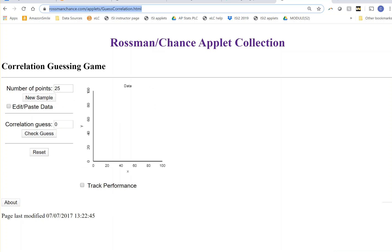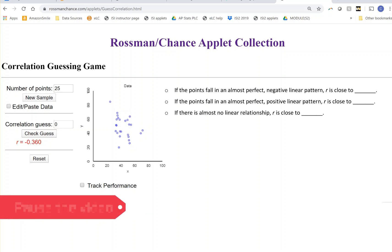Okay, so in this Guess the Correlation app, when you click New Sample, it gives you a sample of dots. There's a place if you want to type in your guess for the correlation or you don't have to. When you click Check Guess, it shows you what the correlation is. So if you want a new sample, you can do that and see what the correlation is. Pause the video for a second, play around with this applet, and see if you can answer these questions.